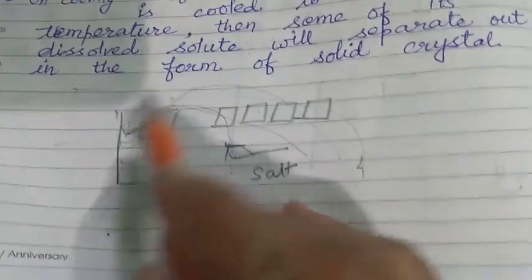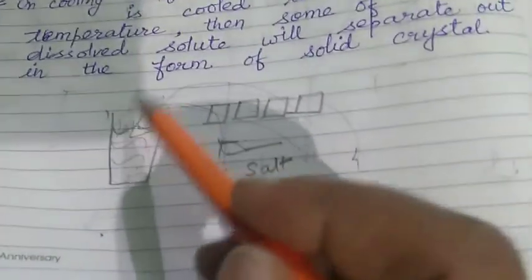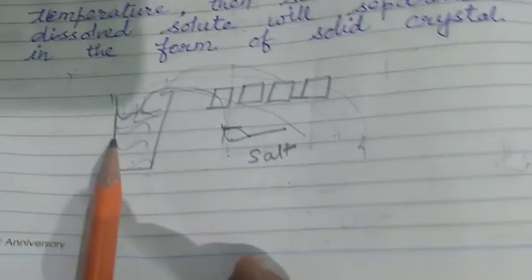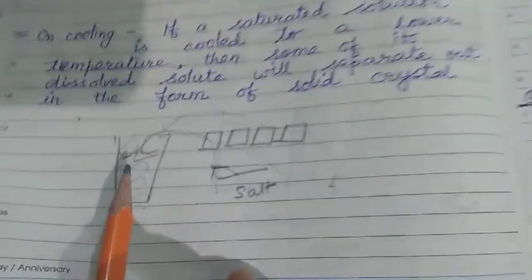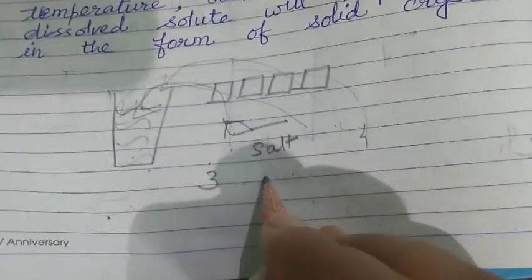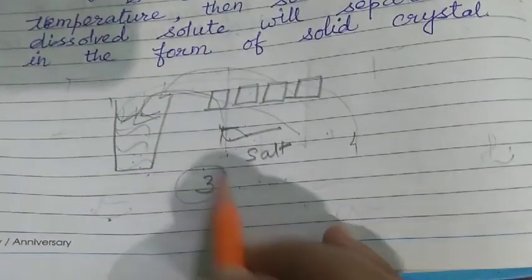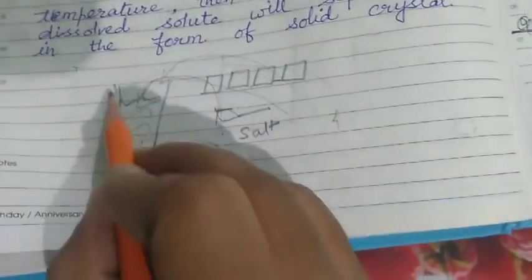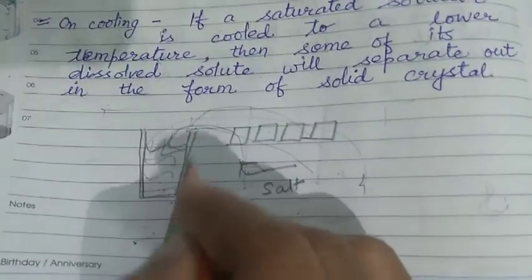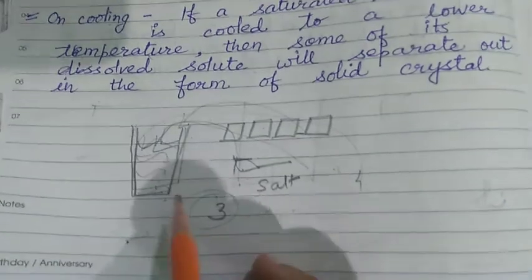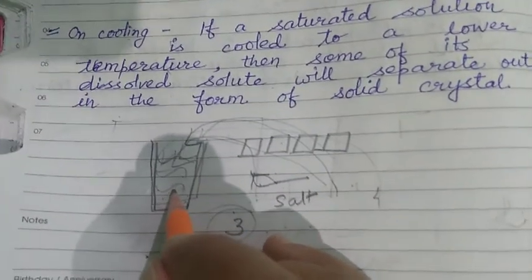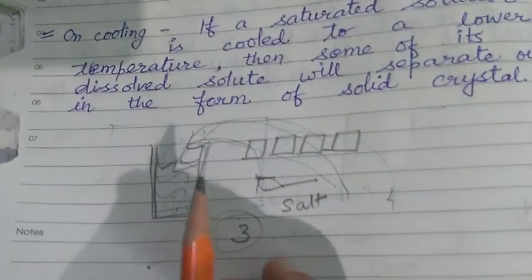Then you put the fourth spoon of salt and you stir it, but that salt does not get dissolved in the water. So that means when you added three spoons of salt and that salt got dissolved, at that particular stage the solution became saturated. Now you cannot add any more salt into this solution without changing its temperature.